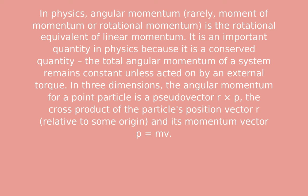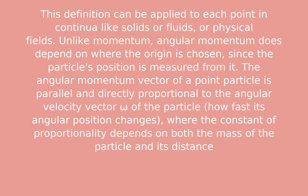In physics, angular momentum is the rotationally equivalent of linear momentum. It is an important quantity in physics because it is a conserved quantity — the total angular momentum of a system remains constant unless acted on by an external torque. In three dimensions, the angular momentum for a point particle is a pseudo vector r times p, the cross product of the particle's position vector r and its momentum vector p, which equals mv.